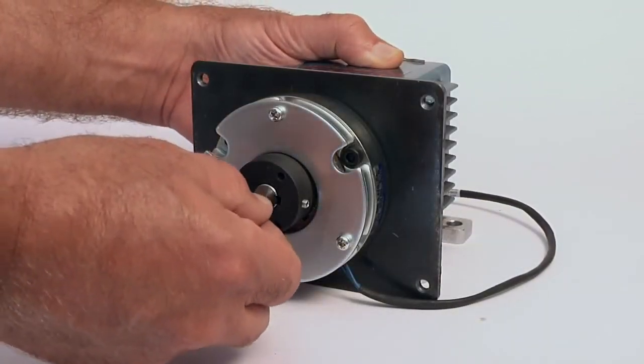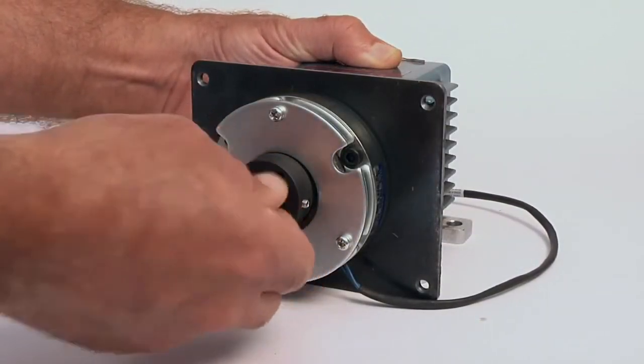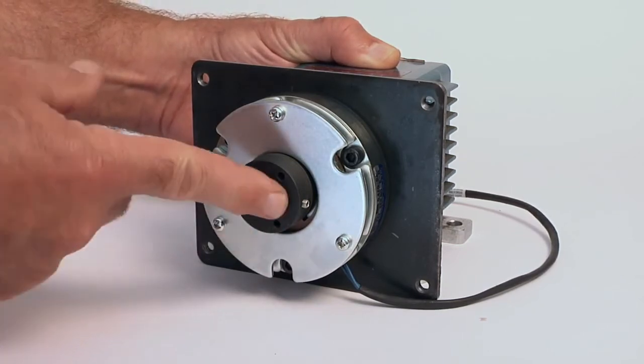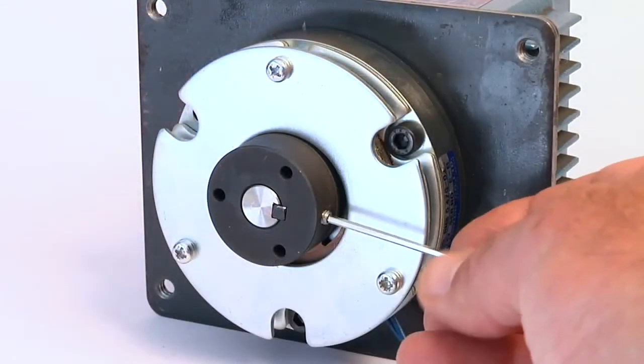Insert the key into the keyway of the hub and shaft. Once this position is located, lock the brake down via the set screw.